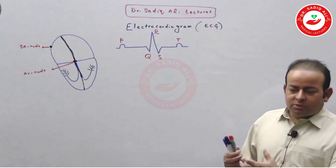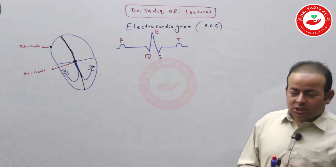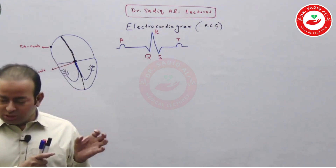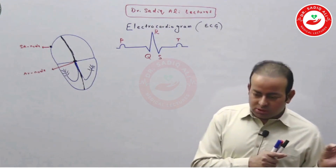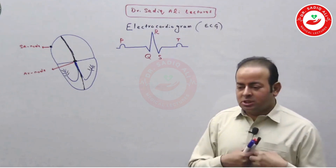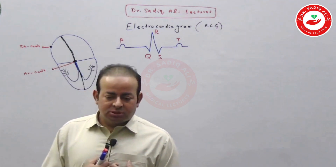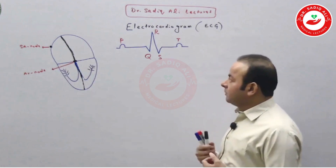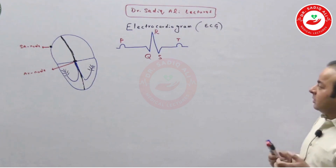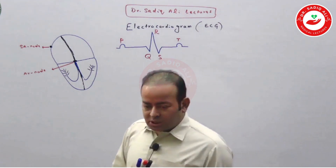Every day in the hospital we come across a lot of patients and we refer to ECG all the time, but we should know how to read and interpret that ECG. Any patient who comes to the hospital with chest pain — no matter what the cause, whether cardiac, lungs, or muscle problem — the first and best initial investigation we do is ECG. The name itself suggests: electro means electrical activity, cardio means heart, and gram means paper.